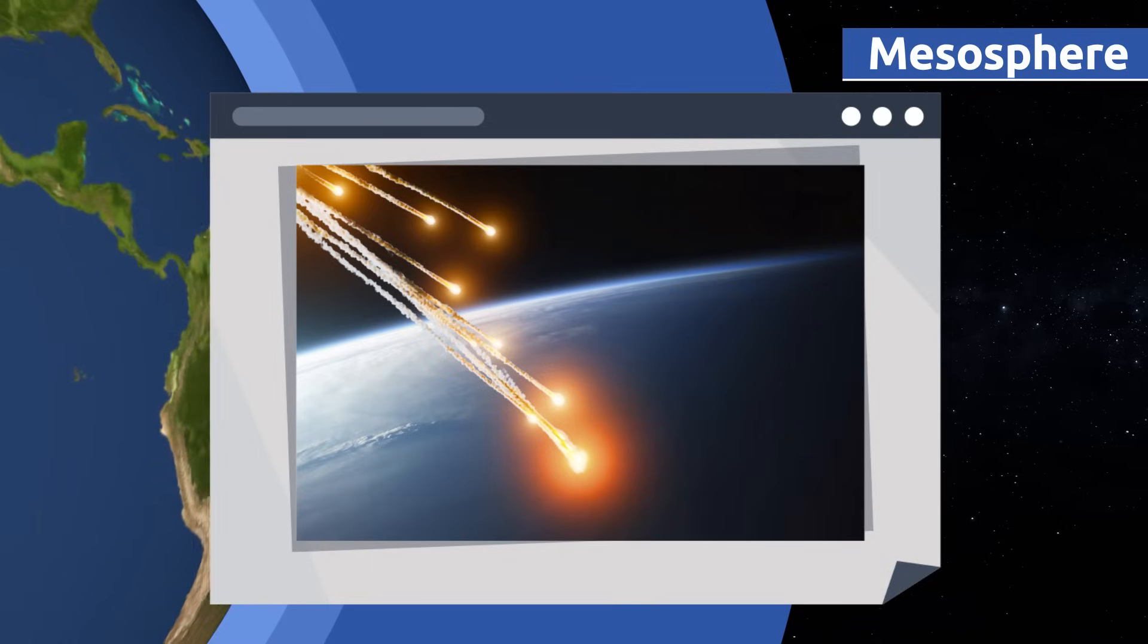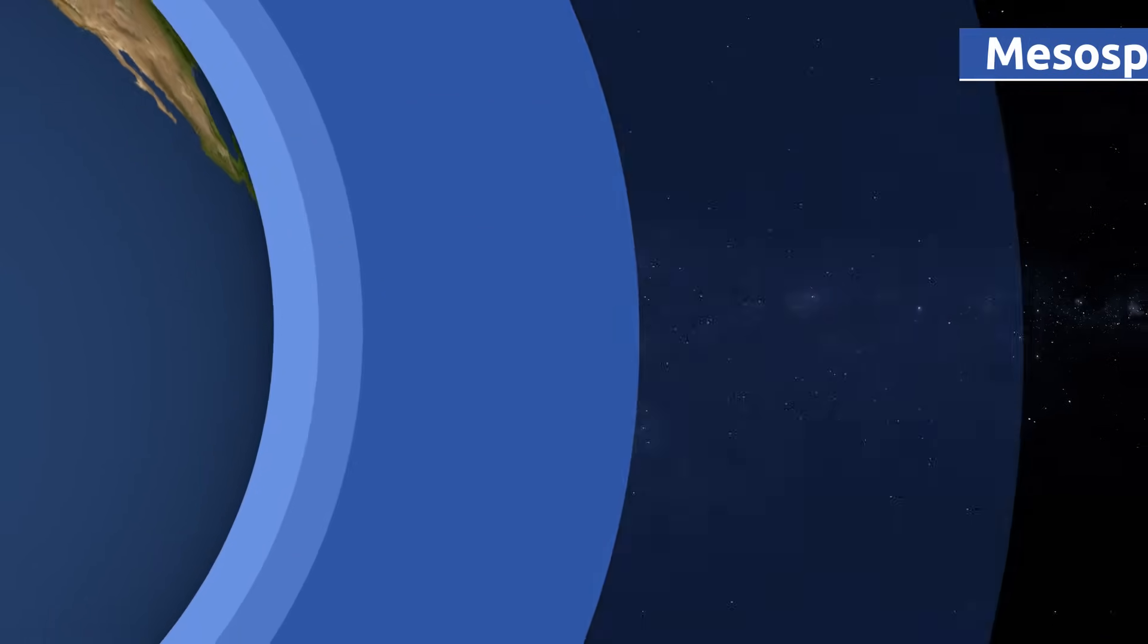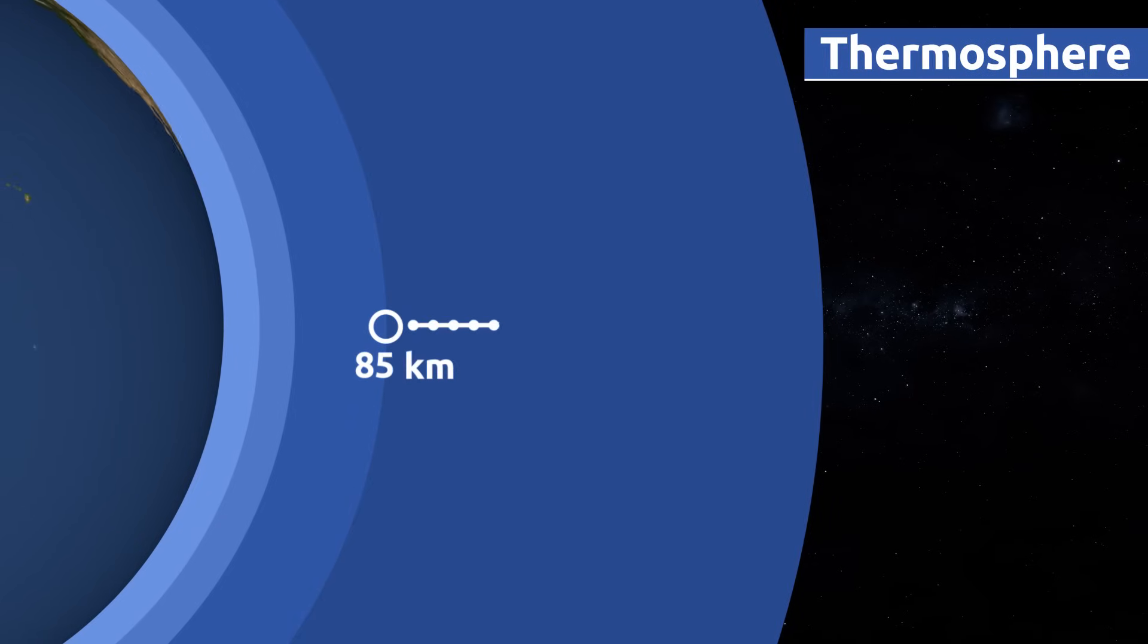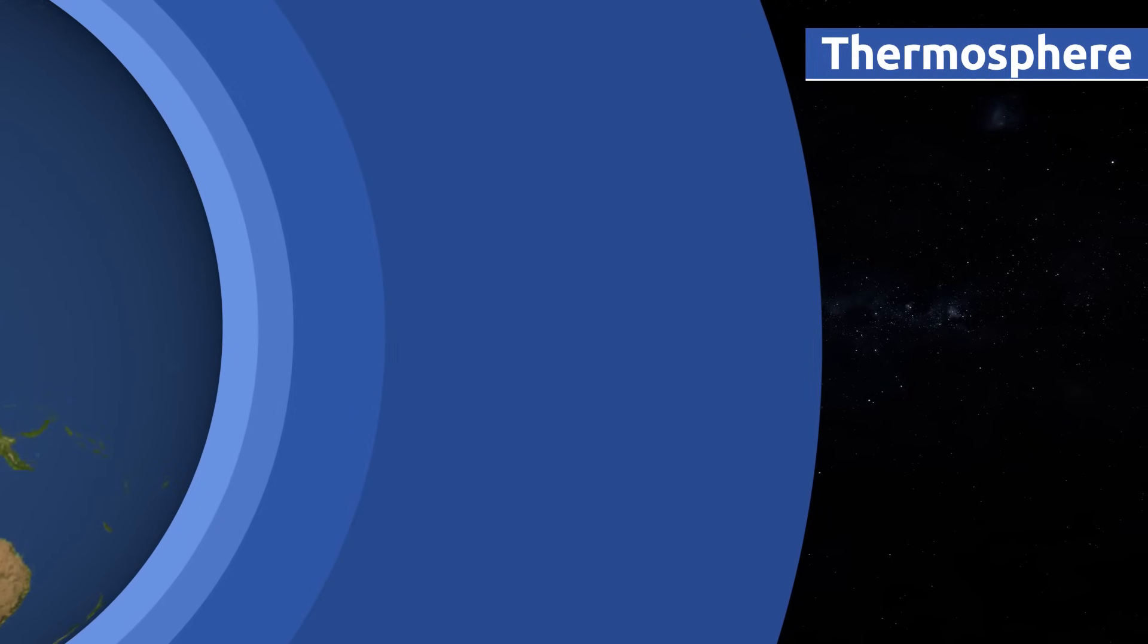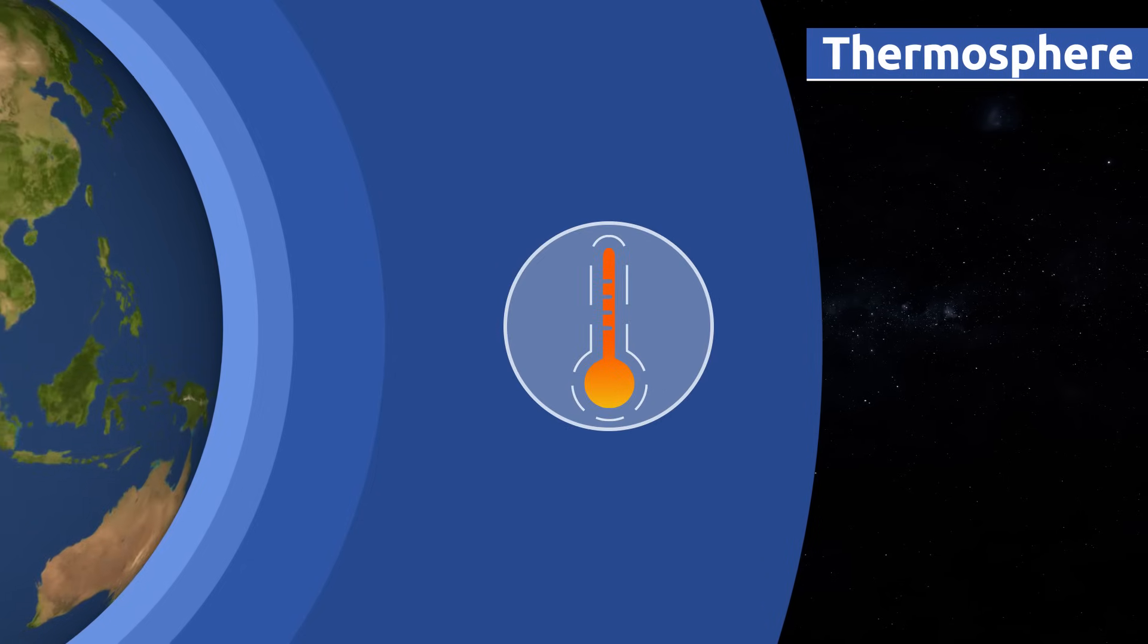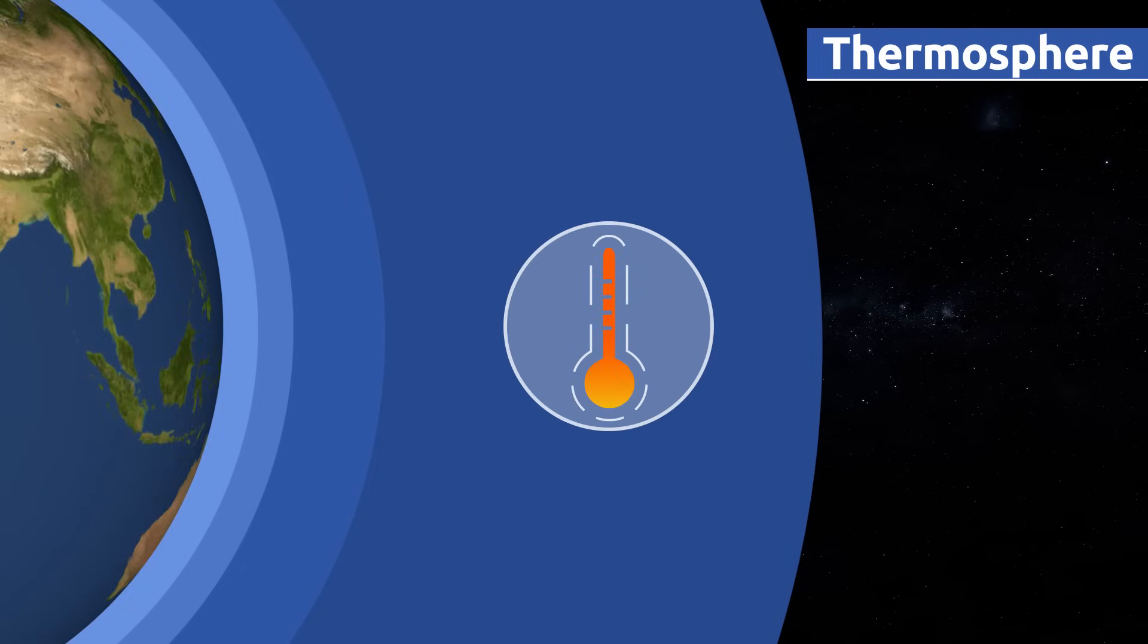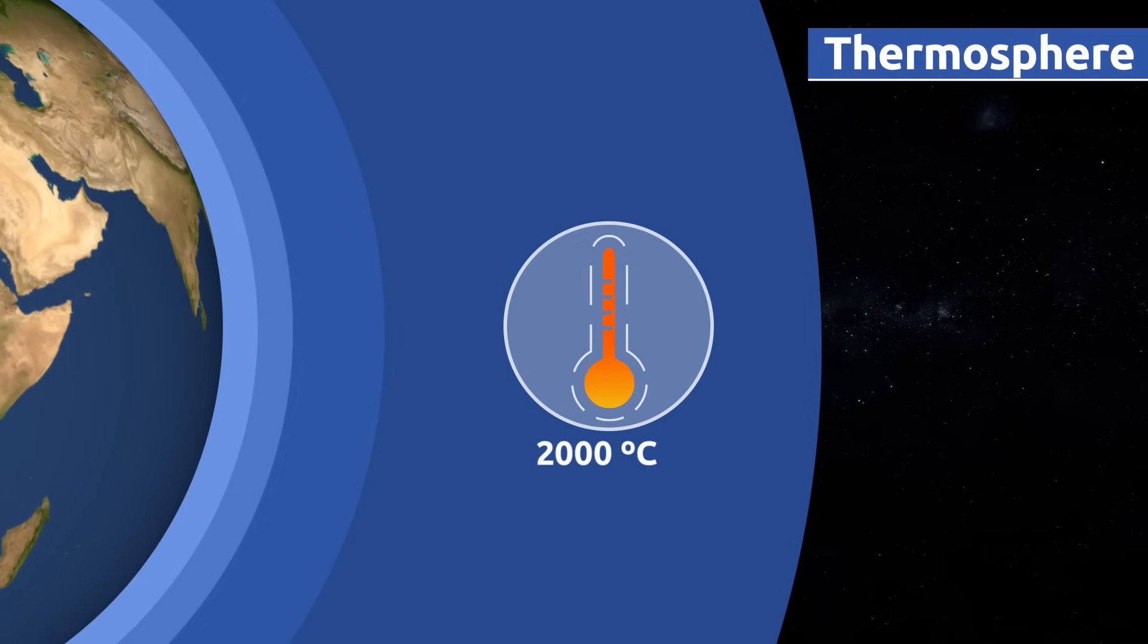The thermosphere extends to an altitude of 85 to 500 kilometers above sea level. This layer is the warmest of all five layers. Air temperature on the surface of the earth is kept constant thanks to the thermosphere. In this layer, temperatures can rise to more than 2,000 degrees Celsius.